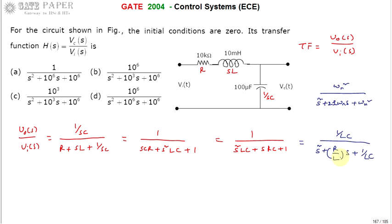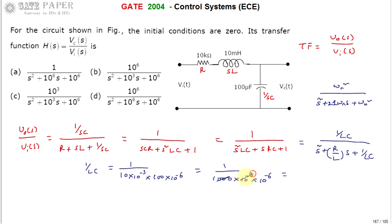We now obtain the coefficients using the component values. 1/LC: L is 10 millihenry = 10×10⁻³ and C is 100 microfarad = 100×10⁻⁶. So 1/LC = 1/(10×10⁻³ × 100×10⁻⁶). The 10s cancel, and 10⁻³ × 10⁻⁶ = 10⁻⁹ inverted gives 10⁶, so 1/LC = 10⁶. Next, R/L: R is 10 kilohms.